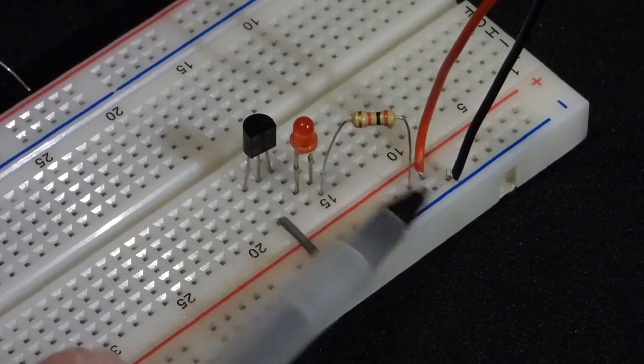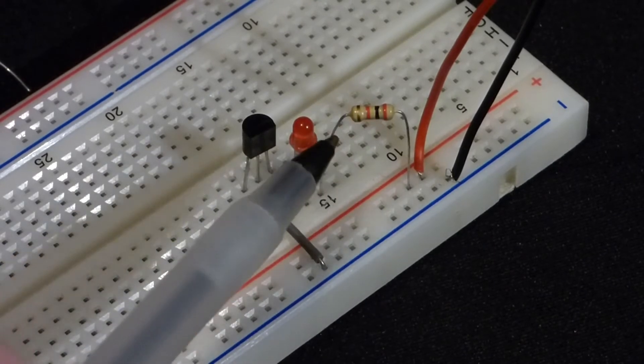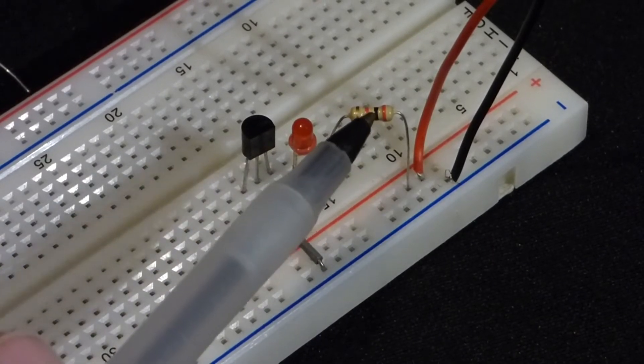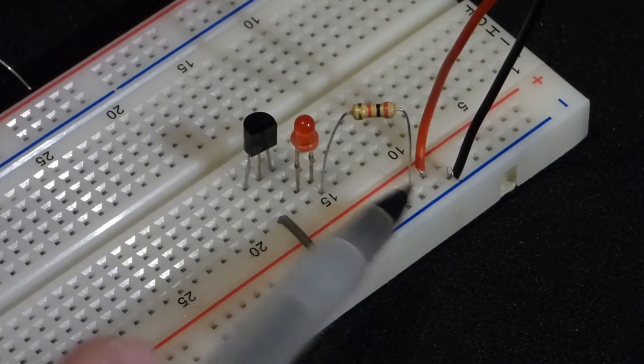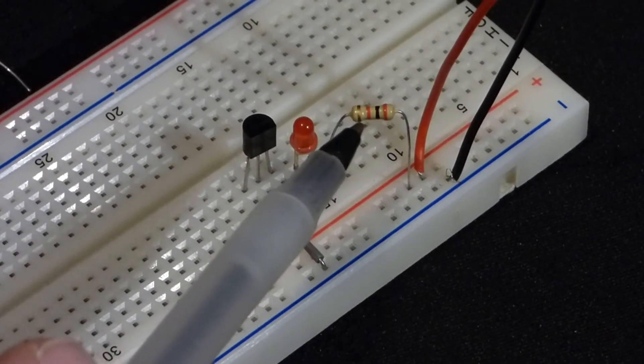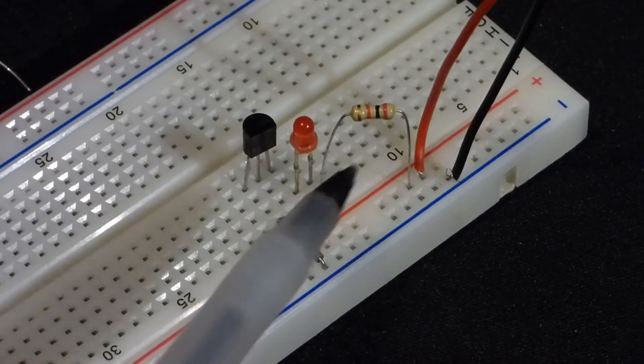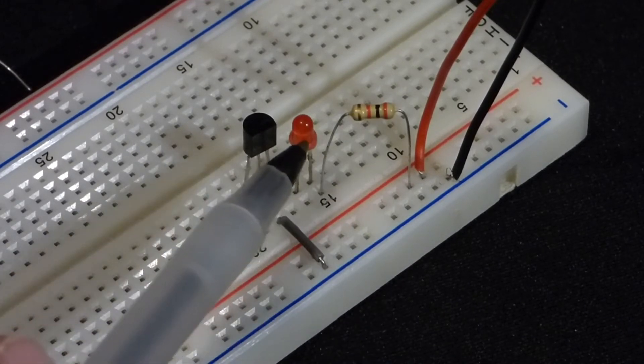And we have a 9 volt battery here, a protective resistor to limit the current. This is a 2 kilo ohm, 2000 ohm resistor. Since this is a 9 volt battery plugged into the rail, we can use 470 ohms or higher, and I just happen to use 2 kilo ohms.